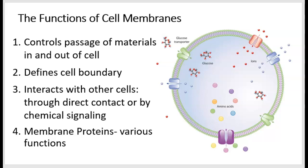Other functions of a cell's membrane include an obvious one, and that is that it defines the boundary of a cell, which to some extent gives it a shape and size. However, there are two other functions that aren't quite as obvious, unless you've had cell biology. One of them is related to how cells communicate with each other or interact with each other. The membrane could directly communicate with another cell through something called direct contact, which just means that they lie next to each other and touch.